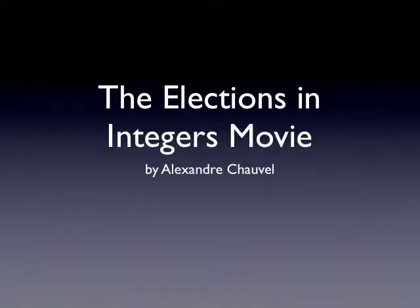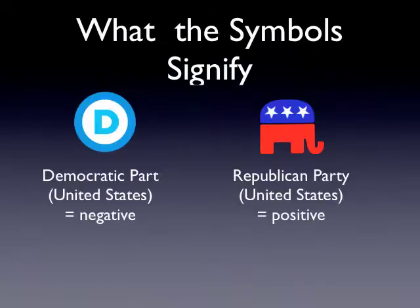Hello everyone, my name is Alexander Chevelle and today I will be going over a model signifying the operation and method of working out with integers. The model in particular is represented by the presidential elections with the two largest majorities, with the Democratic party as negative and the Republican as positive.